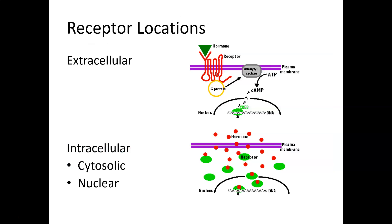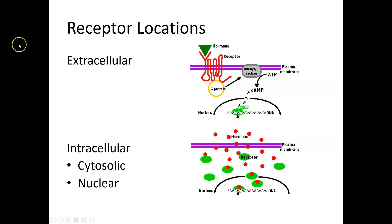For extracellular receptors, a lipophobic ligand (like a hormone shown as a green triangle) binds to a surface receptor, which activates something inside, causing a cascade to produce some action. For intracellular receptors, lipophilic molecules diffuse across the cell membrane and bind to cytosolic receptors, or pass through into the nucleus and bind nuclear receptors. Intracellular receptor responses tend to be much slower, while extracellular receptor responses are much faster.